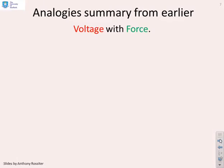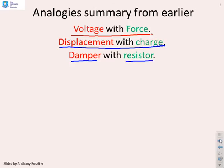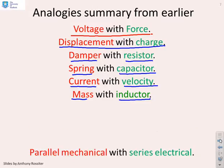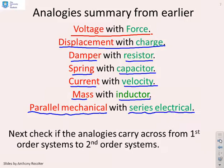Now a reminder of the analogies between mechanical and electrical systems. Voltage is analogous to force; displacement is analogous to charge; a damper is analogous to a resistor — both dissipate energy as heat; a spring is analogous to a capacitor — both store energy as displacement or charge; current is analogous to velocity — both have units of per second; and mass is analogous to an inductor, storing energy when velocity or current is flowing. Parallel mechanical arrangements are analogous to series electrical circuits, since in both cases energy is shared between components.